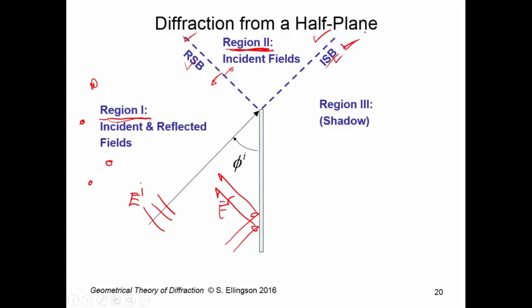Now, on this side of the incident shadow boundary, we'll call region 3, and that's just shadow. It's shadow from any geometrical optics field. That's another way of saying what a shadow is. A shadow is a region in which there is no geometrical optics incident or reflected field. However, we would expect the diffracted field to exist in all three regions. In fact, ideally, what would happen is the diffracted field would mitigate the discontinuities that appear on these shadow boundaries.